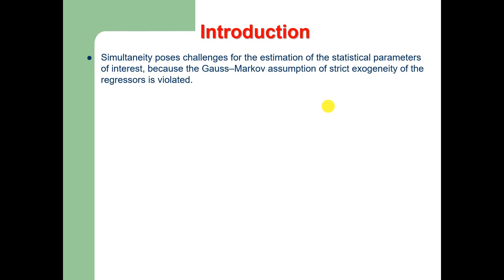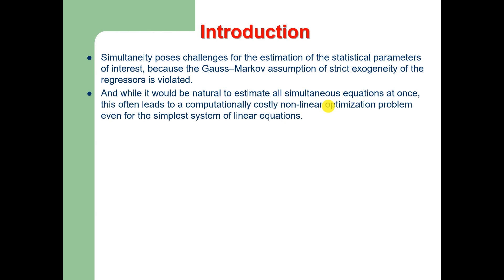Simultaneity poses challenges for the estimation of the statistical parameters of interest because the famous Gauss-Markov assumption of strict exogeneity of the regressors is violated. While it would be natural to estimate all simultaneous equations at the same time, this often leads to a computationally costly nonlinear optimization problem even for the simplest system of linear equations.